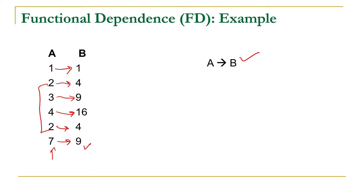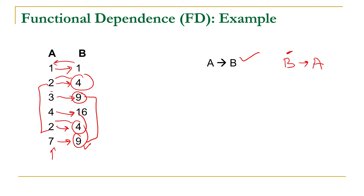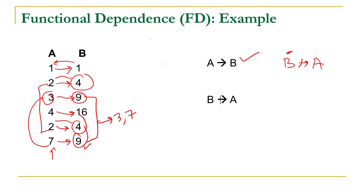Now, is B functionally determining A? We check each value of B. If B is 1, then A is 1. If B is 4, then A is 2. If B is 9, then A is 3 and 7. When B is 9, we are getting multiple values of A. Therefore, B to A is not functionally determined. We conclude that A is functionally determining B, because for each value of A there is only one value of B. While B is not functionally determining A, because when B is 9, we get multiple values of A: 3 and 7.